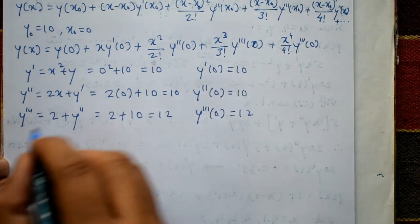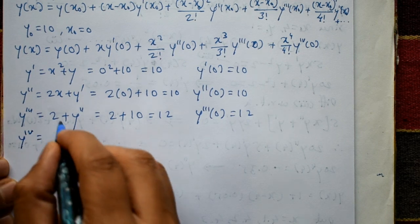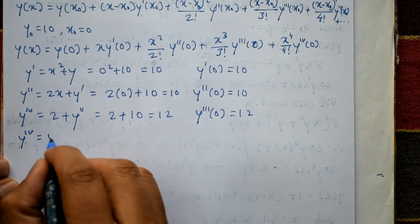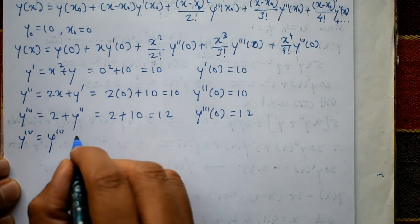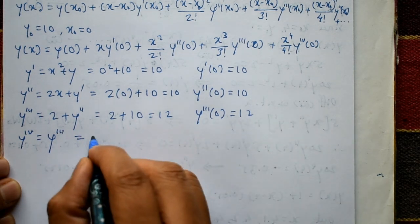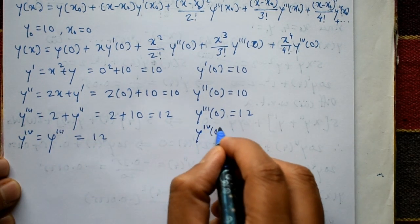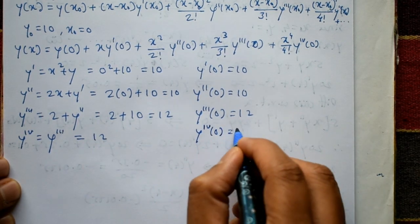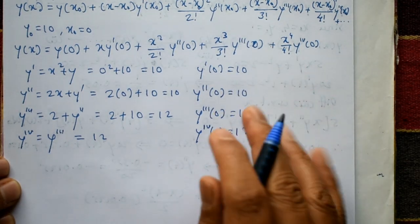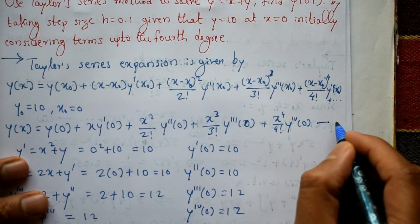Differentiating once more, y'''' = y'''. Since y'''(0) = 12, the fourth-order derivative y''''(0) is also equal to 12.